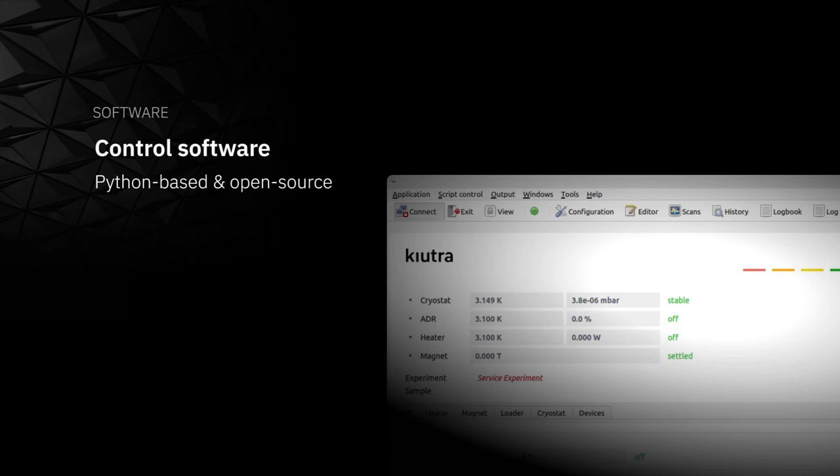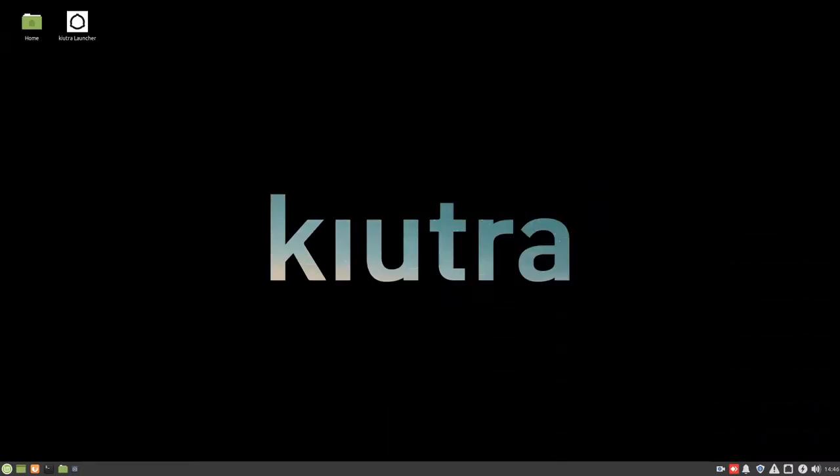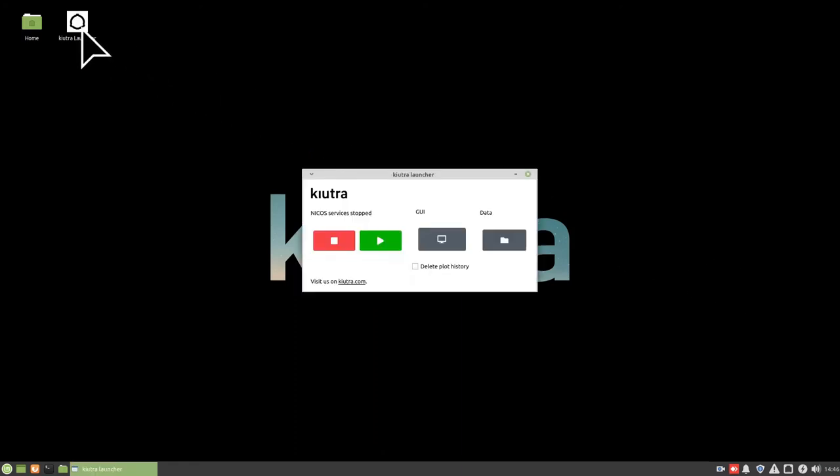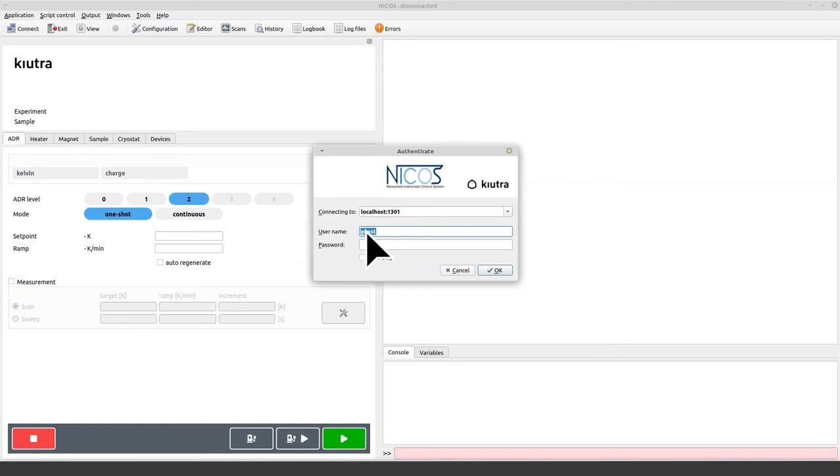I want to show you now how this kind of measurements can be done using our Python-based open source control software. We start the software by pressing the Qtra launcher symbol on the desktop of the supplied measurement PC. From the launcher we start the instrument control software by clicking the play button. Then we open the user interface by clicking the GUI button. You can now log into the graphical user interface by entering your username and password.